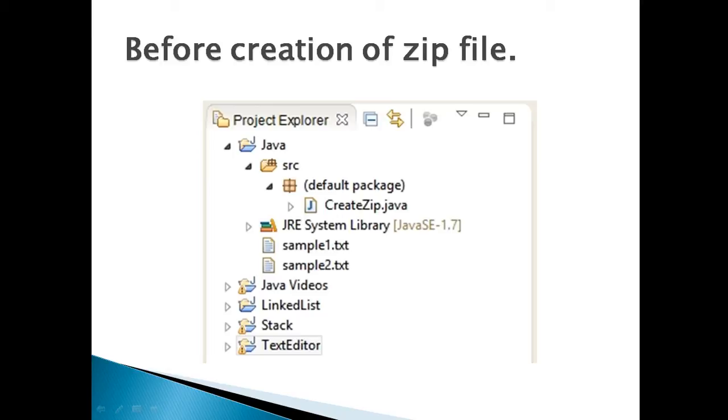In this simple tutorial, we will create a zip file by name samples.zip through Java code. This zip file will contain two already created text files such as sample1.txt and sample2.txt. Before creating zip file there are only two files sample1.txt and sample2.txt, as shown in figure.